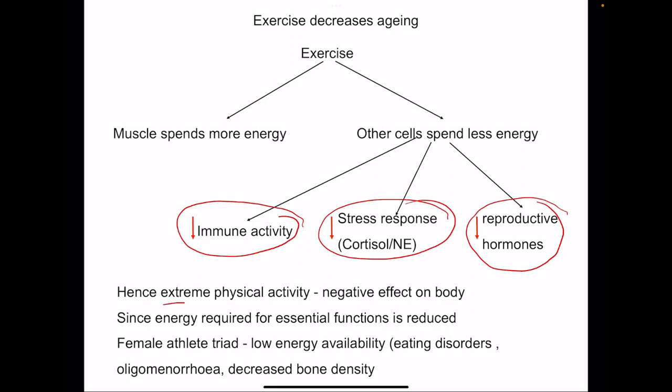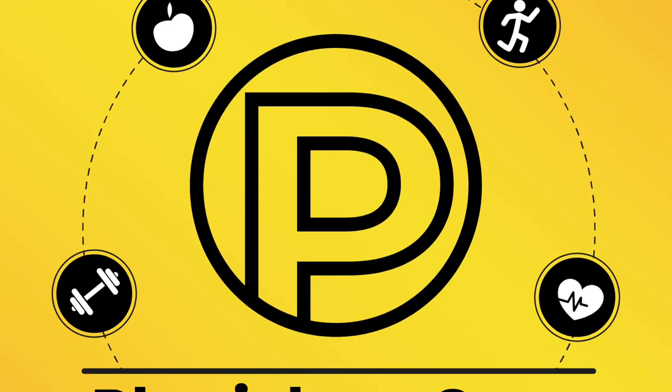When there is extreme physical activity, it has negative effect on body because of too much decreased function of other cells. It is seen in one phenomenon known as female athlete triad, where low energy availability leads to eating disorders, oligomenorrhea due to decrease in reproductive hormones, and decrease in bone density. Too much exercise is also not good; that is having negative effect on body.